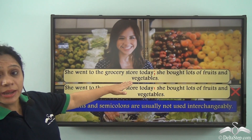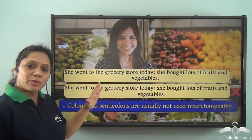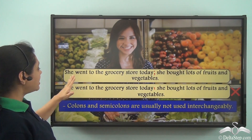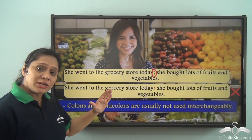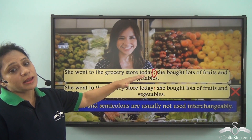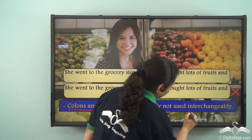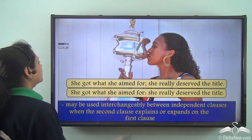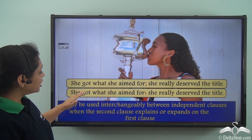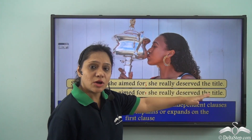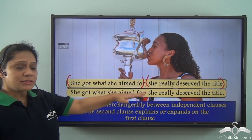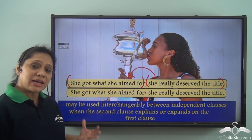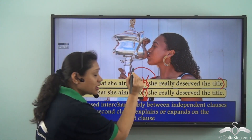It is important to note that colons and semicolons are usually not interchangeable. For example, 'She went to the grocery store today; she bought lots of fruits and vegetables' uses a semicolon because the second clause does not elaborate on the first. However, if the second independent clause elaborates on the first — as in 'She got what she aimed for: she really deserved the title' — then a colon and a semicolon can be used interchangeably.